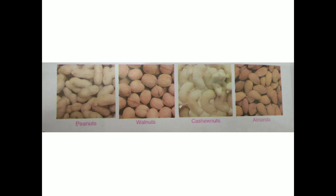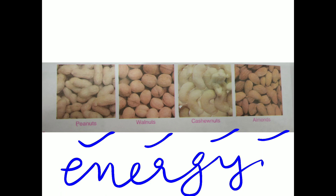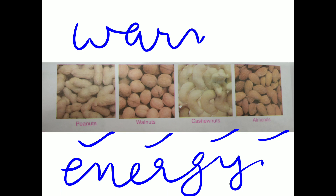Now see these — peanuts, walnut, cashew nuts and almond. These are also seeds that we get from plants. They are used to make different dishes or can be eaten raw. These nuts provide lots of energy and keep our body warm. You enjoy munching nuts like peanuts, walnuts, cashew nuts and almonds especially in winter.